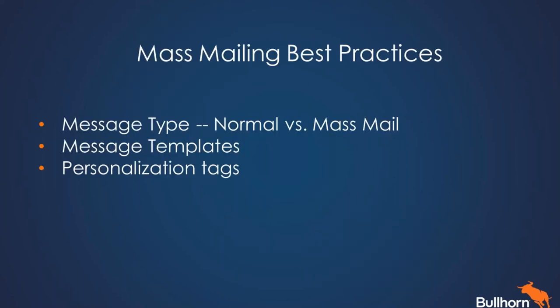Now let's take a look at some best practices for sending a mass mailing in Bullhorn. We're going to be discussing the different message types — that is normal versus mass mail — also message templates, as well as personalization tags. When you are conducting a mass mailing from a distribution list, it's really important to pay attention to the message type field. If you remember, I selected Email All, and while that may look like it's not blind carbon copying those recipients, it truly is.